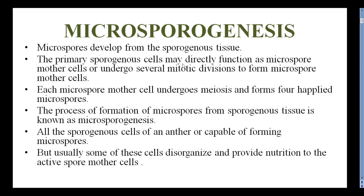Microspores develop from the sporogenous tissue. The archesporial cells divide periclinally and anticlinally, producing two types of cells: first, primary parietal cells, and second, the sporogenous layer. This sporogenous layer is formed directly from the microspore mother cells. The primary sporogenous cells directly function as microspore mother cells.